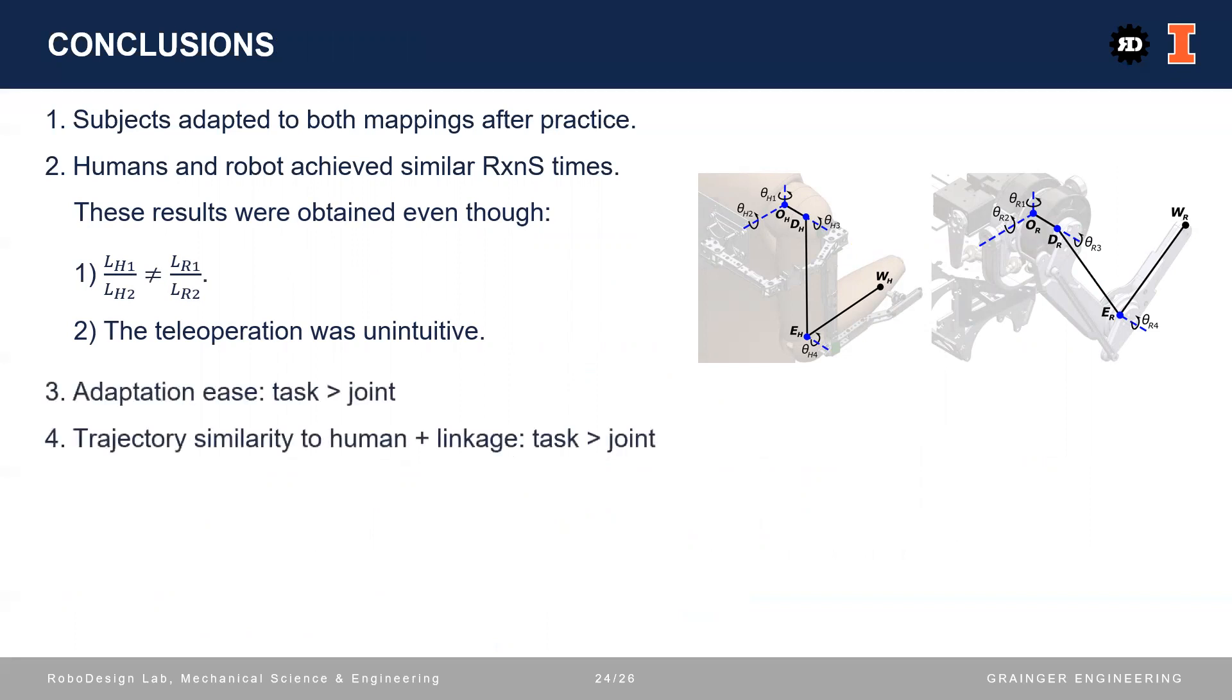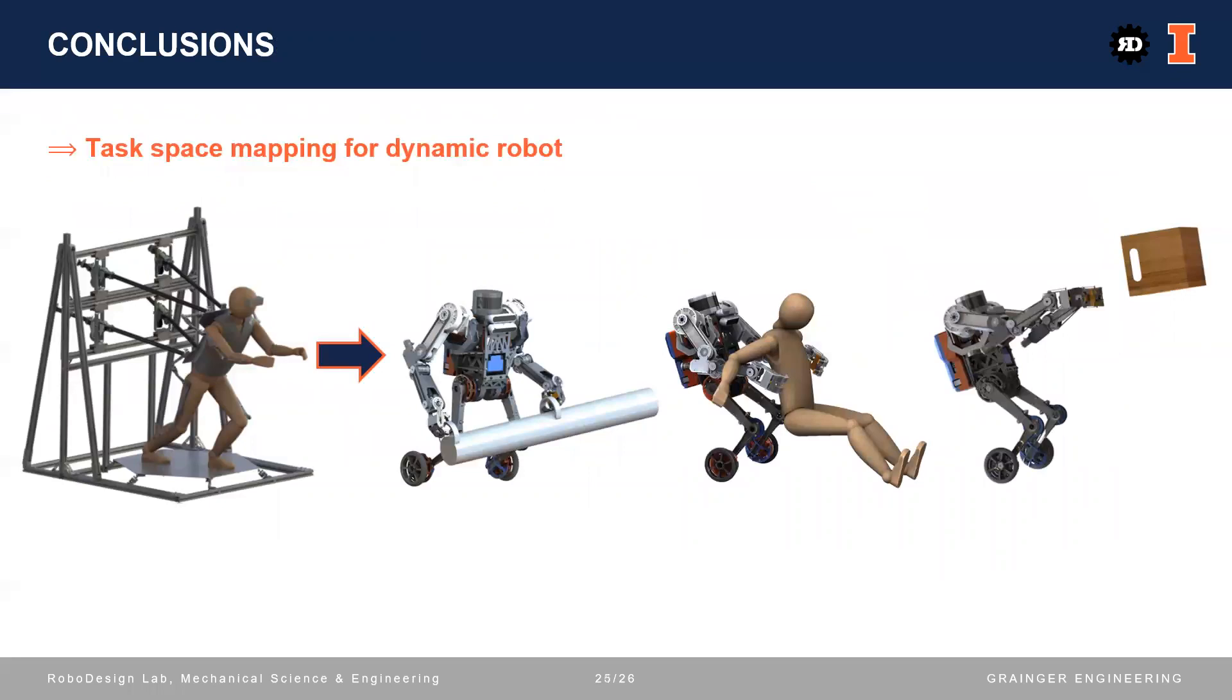Next, task-based mapping was easier to adapt to than joint-based mapping, and task-based mapping yielded more similar human trajectories with the human trajectories without teleoperation. Therefore, we conclude that for our dynamic humanoid robot teleoperation, we should choose task-based mapping for arm teleoperation.